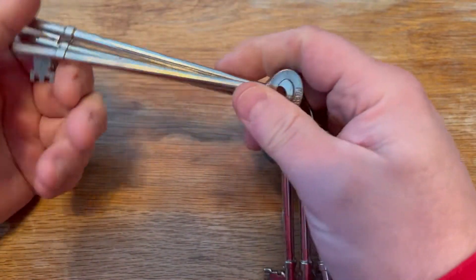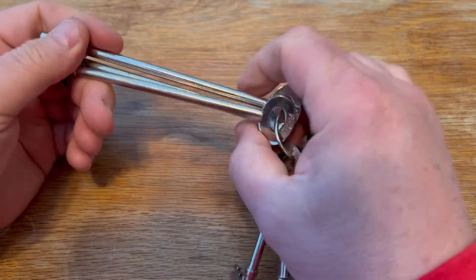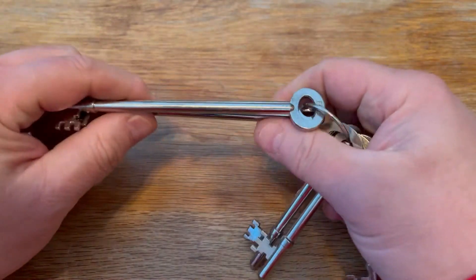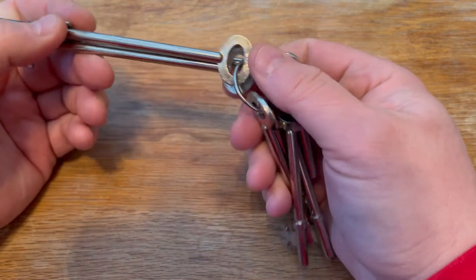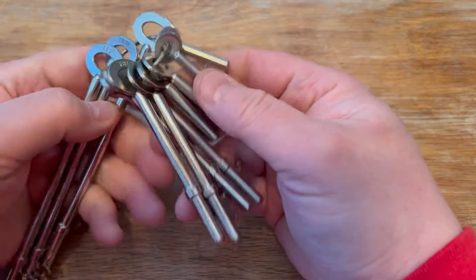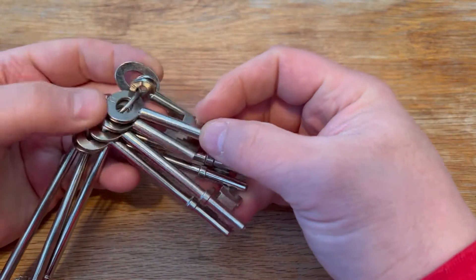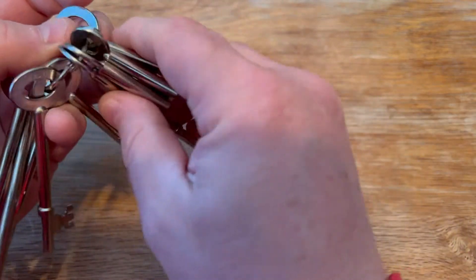There's only six fire brigade keys. You've got an FB1, which is a mortise and rim key. You've got an FB2, which is a mortise and rim key. FB4, which is a slam lock. You've got an FB1 padlock key, FB11 padlock key, and FB14 padlock key.